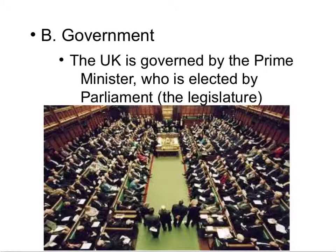Let's talk about the government of the United Kingdom. It's essentially a constitutional monarchy, governed by the Prime Minister, who is elected by Parliament — their version of our Congress, although it predates our Congress by quite a lot. Parliament is essentially their legislature.